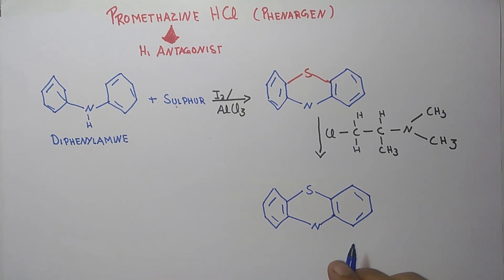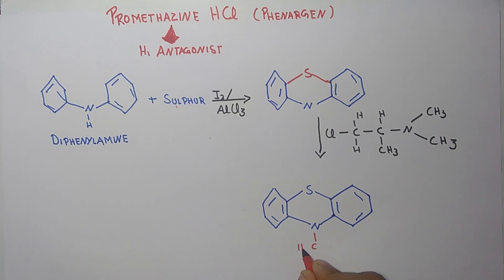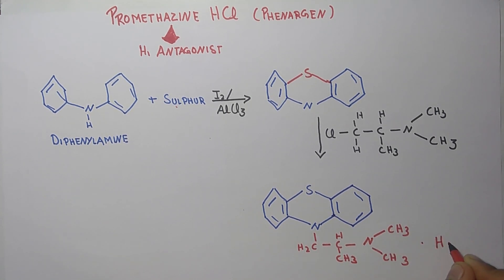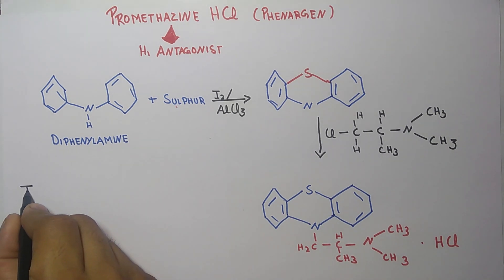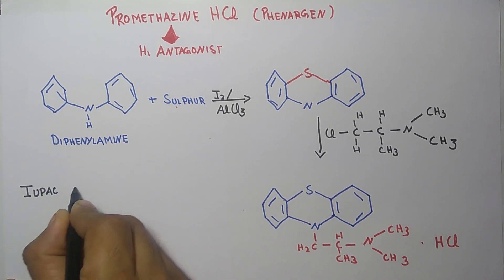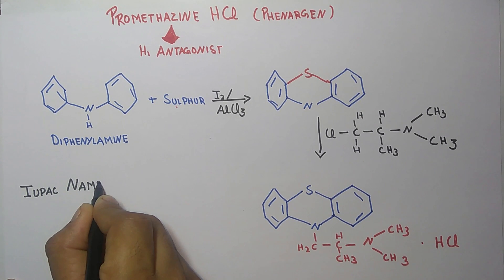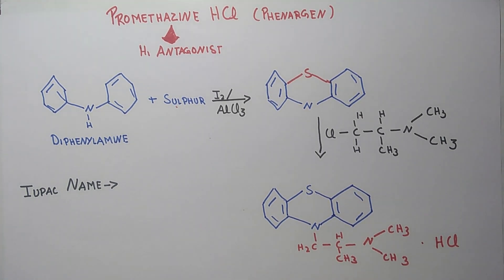So in this structure, there will be addition of this side chain into this structure here. That gives us promethazine hydrochloride. The IUPAC name of promethazine hydrochloride is NN-dimethyl-1-(phenothiazin-10-yl)propan-2-amine hydrochloride.